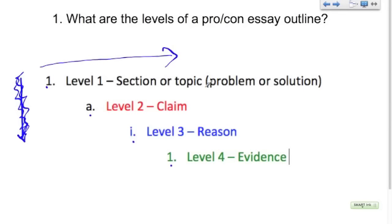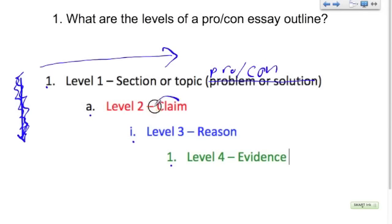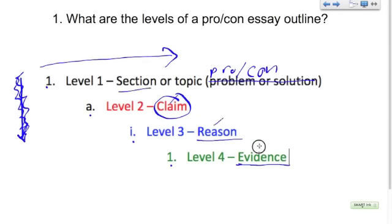Level one will be a section or topic heading — it says problem or solution, it says pro or con. Level two will be your claims. Level three will be your reasons. And level four will be your evidence. Those are the levels right there: sections, claims, reasons, and evidence.